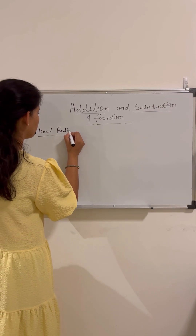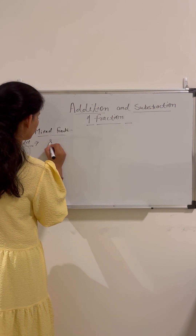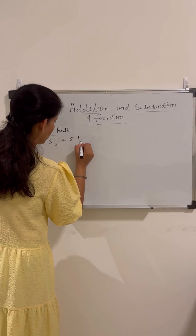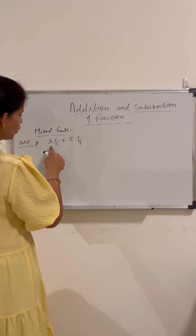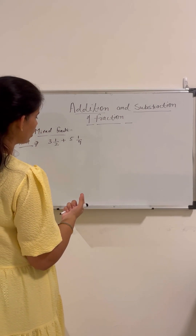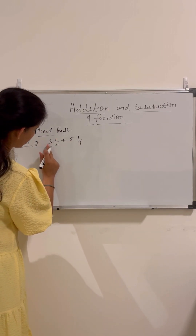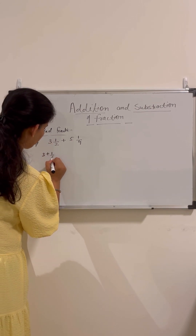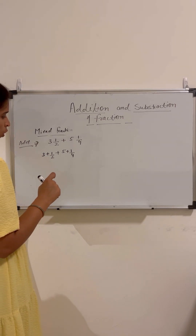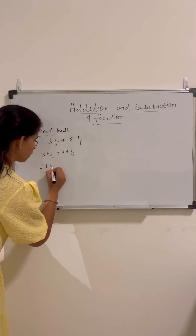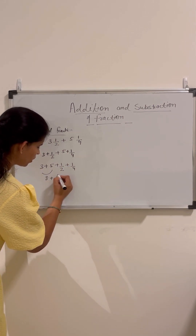If we need to add two mixed fractions — for example, 3 and 1 by 2 plus 5 and 1 by 4 — there are two different ways to do this. The first way uses the fact that addition holds the associative and commutative property. So we can rewrite it as 3 plus 5 plus 1 by 2 plus 1 by 4, which gives us 8 plus 1 by 2 plus 1 by 4.